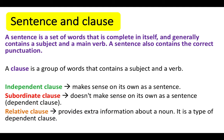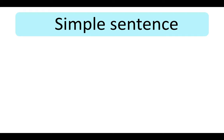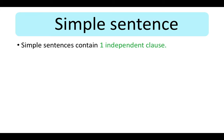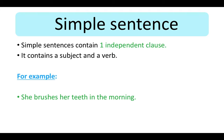A relative clause provides extra information about a noun. It is a type of dependent clause. Simple sentences contain one independent clause. It contains a subject and a verb.